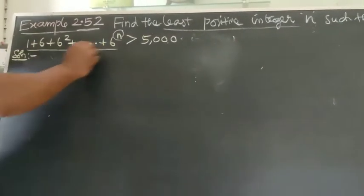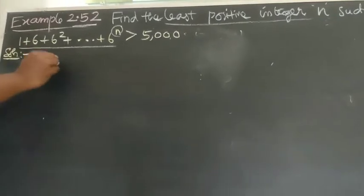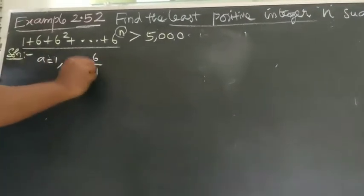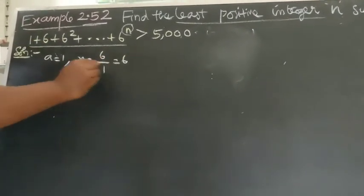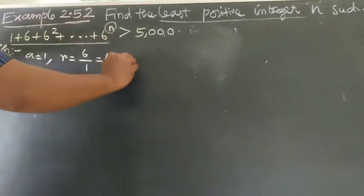Here, 1 plus 6 plus 6 squared - this is GP form where a equal to 1 and r equal to second term divided by first term, 6 by 1 equal to 6. n equal to n and Sn, the sum, is greater than 5,000.